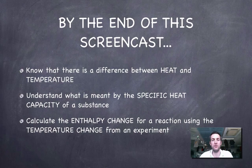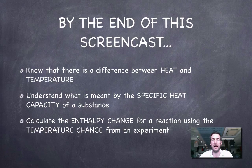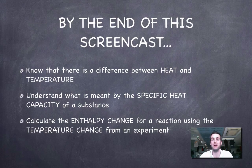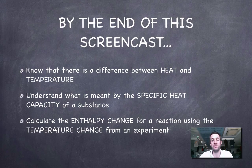What we'll hopefully understand by the end of this film is that there is actually a difference between heat and temperature, and that we can relate these two quantities by using something called the specific heat capacity of a substance. If we can do that, we might be able to use temperature changes from experiments to calculate enthalpy changes for chemical reactions.